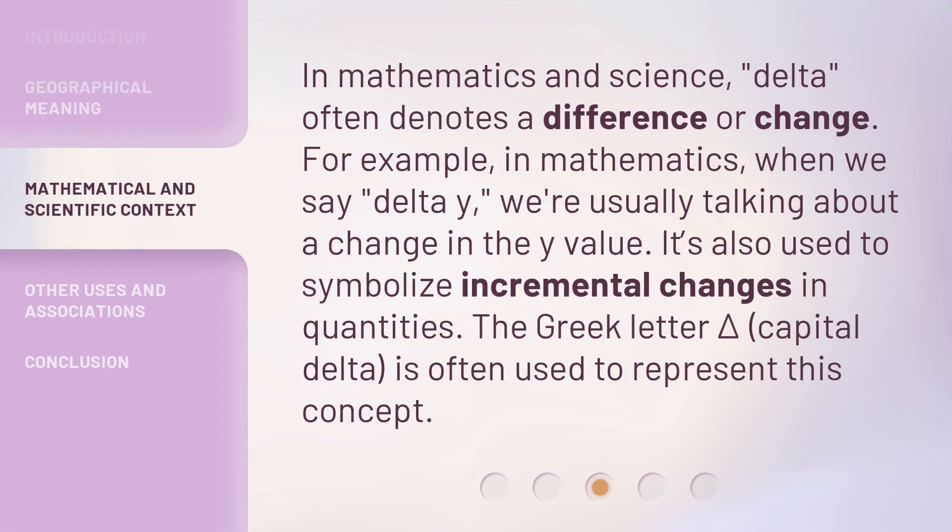In mathematics and science, Delta often denotes a difference or change. For example, in mathematics, when we say Delta Y, we're usually talking about a change in the Y value. It's also used to symbolize incremental changes in quantities. The Greek letter Delta — capital Delta — is often used to represent this concept.